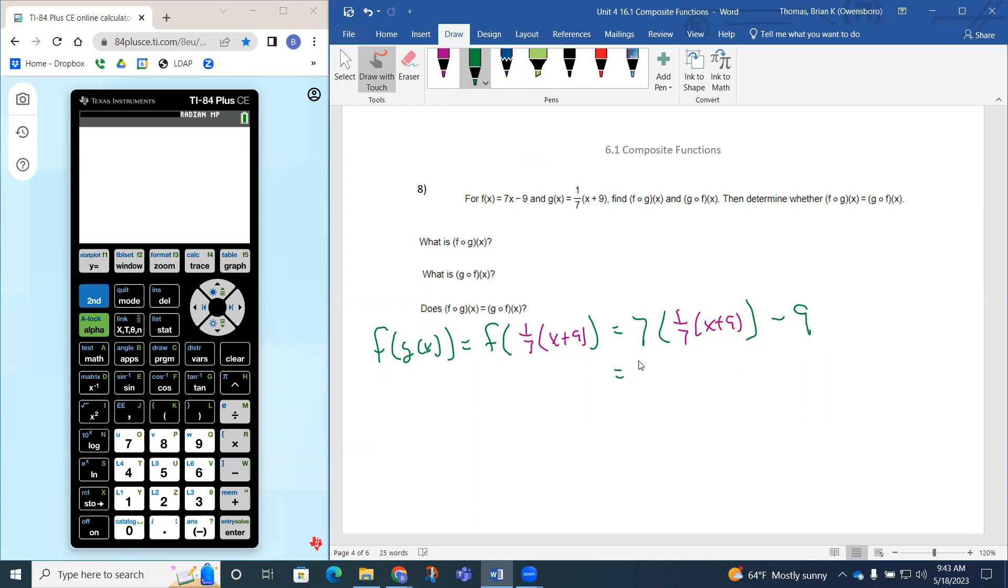So if we simplify that, 7 times 1/7, that looks like they will actually cancel out. Those are reciprocals of each other. So 7 times 1/7, since those are reciprocals, they should just divide out, cancel. It would be 1.